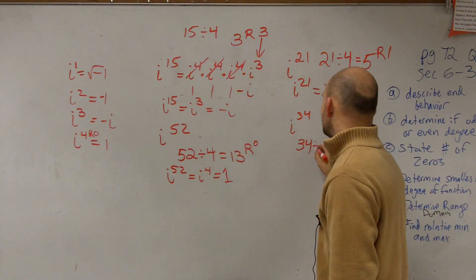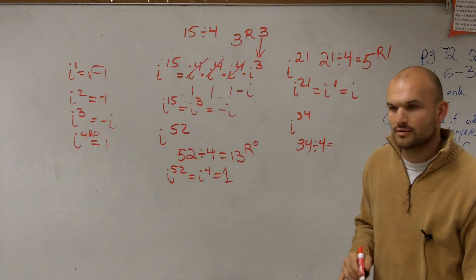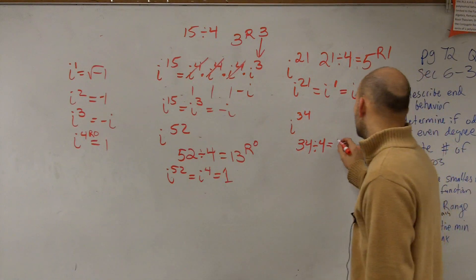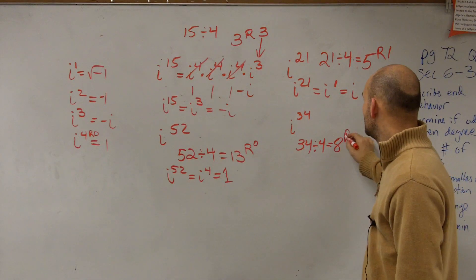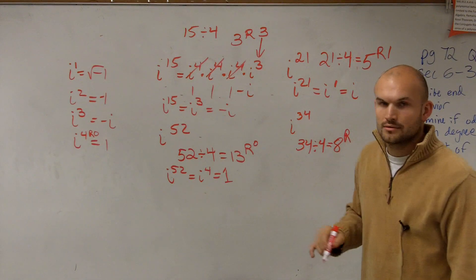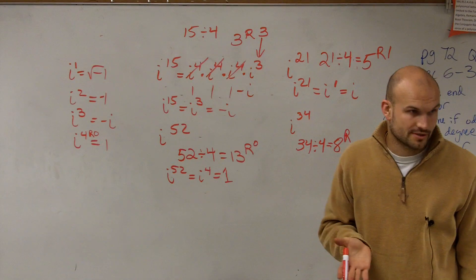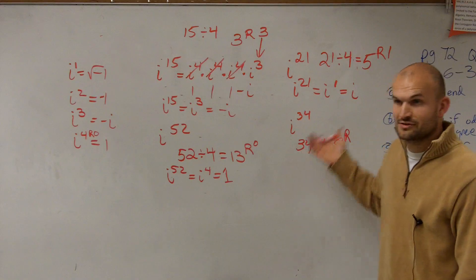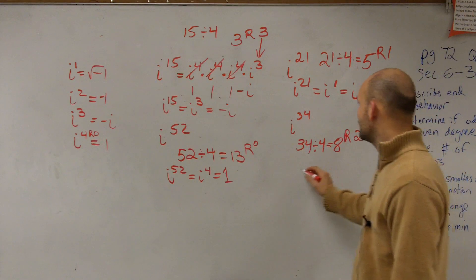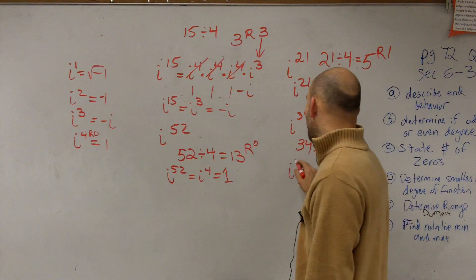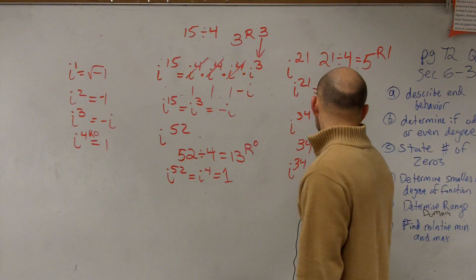Let's do the last one: i to the 34th. 34 divided by 4 is 8 with a remainder of 2. Therefore, i to the 34th equals i squared.